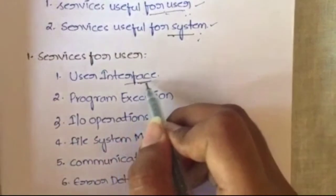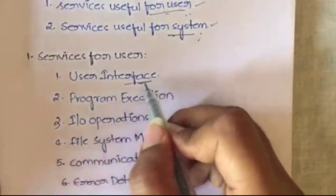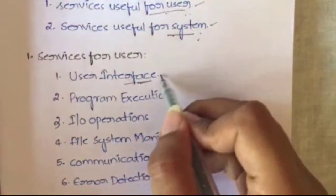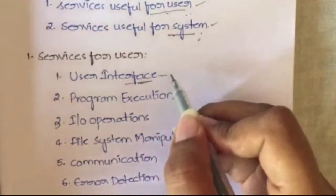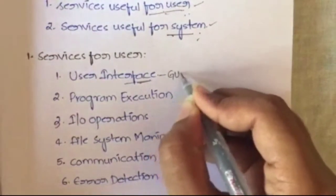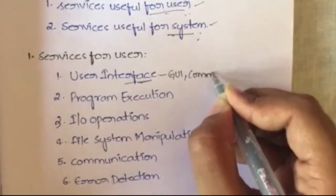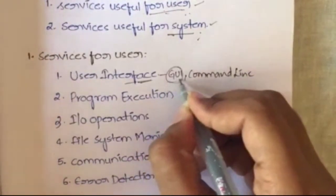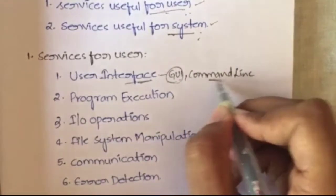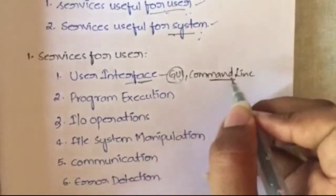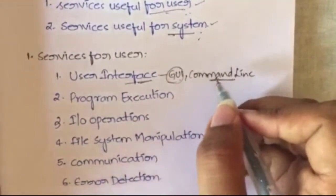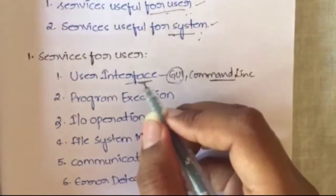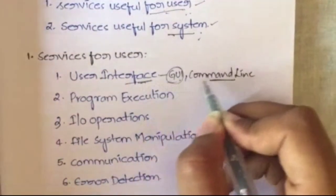The first service useful for the user is user interface. User interface means how you interact with the computer. You have various mediums — you can interact through a graphical user interface by tapping or touching icons, or through the command line by typing commands line by line. User interface is how you communicate with the computer, via GUI or command line.